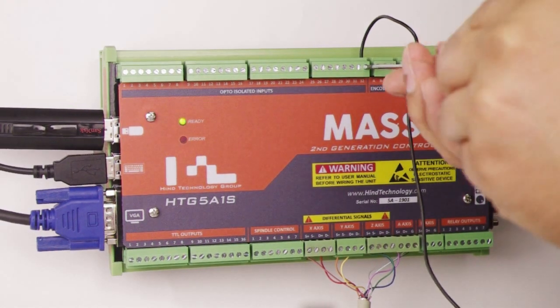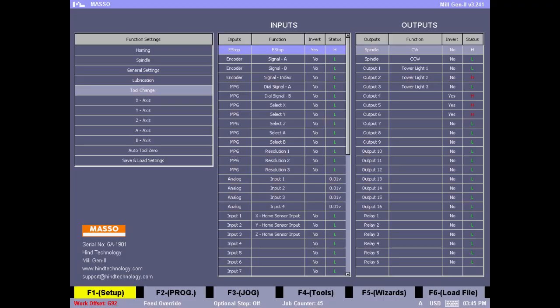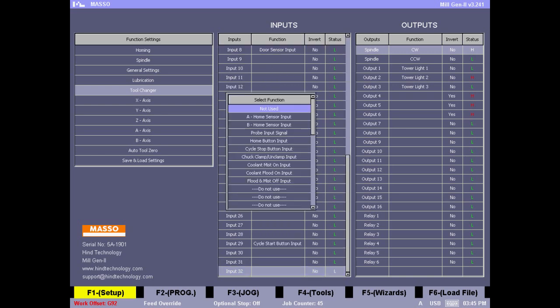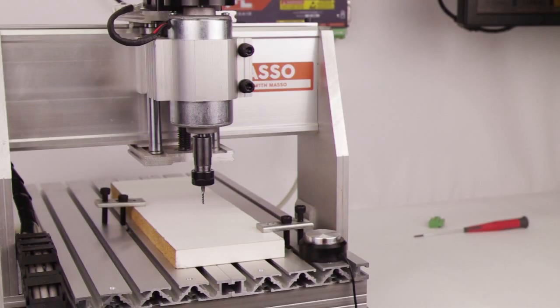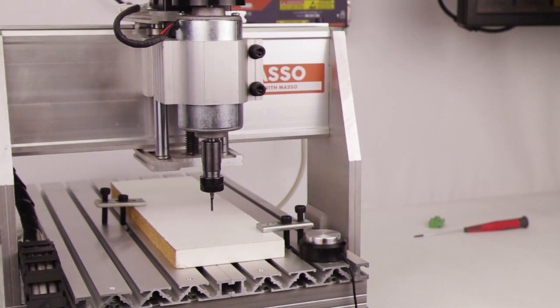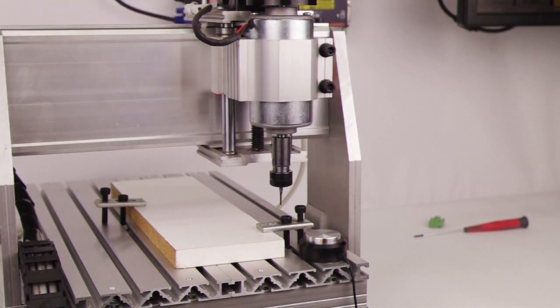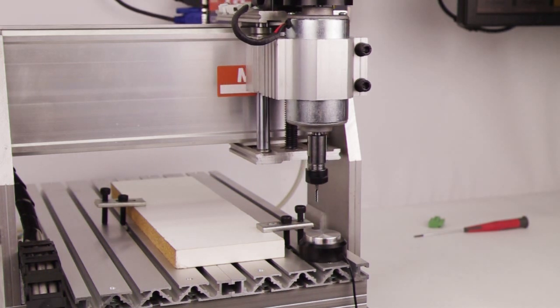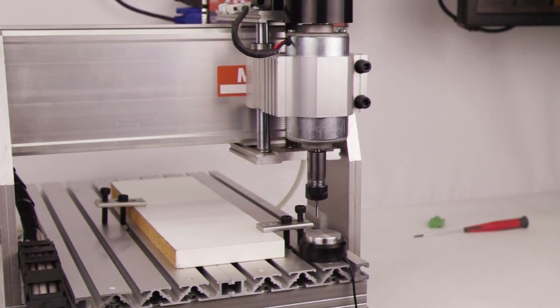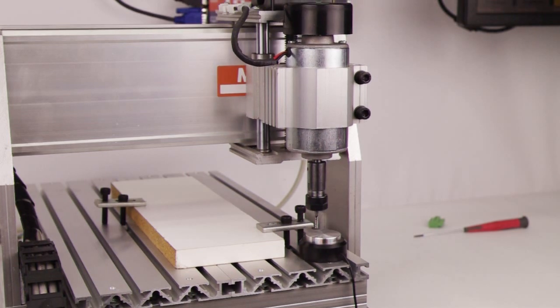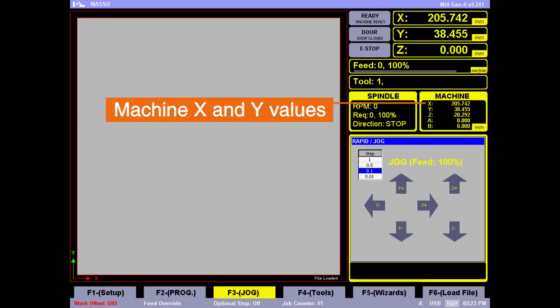In this example we're wiring to input number 32. Go to the F1 setup screen on MASSO and go to input 32 and select that as the tool setter input. Now we need to define the position of the touch plate. Go to F3 screen and roughly position the tool in the middle of the touch plate, then copy the X and Y machine coordinates.